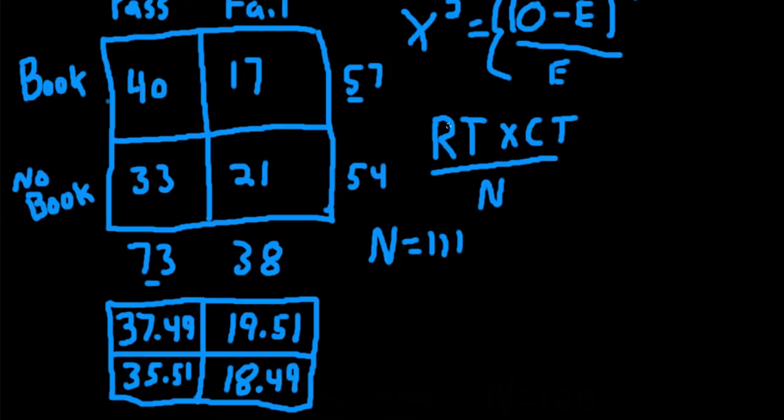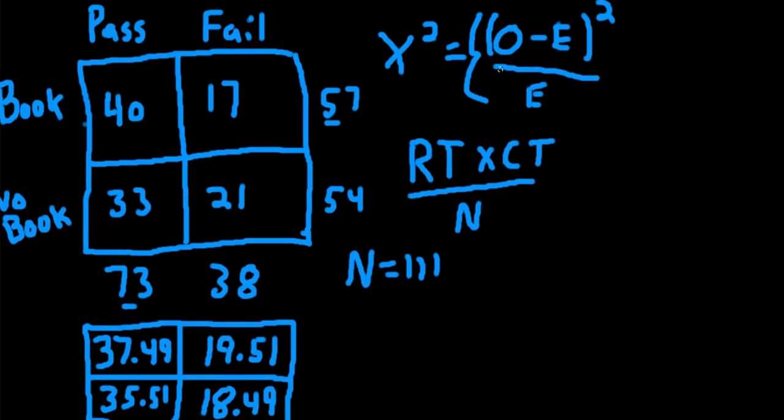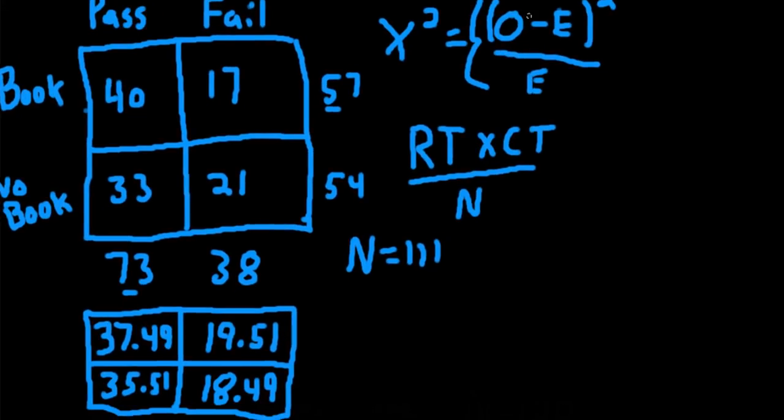So finally, we can plug everything into the equation here, take the observed minus the expected, square it, and then divide it by the expected value. So I'll continue putting it in the two by two table like before.